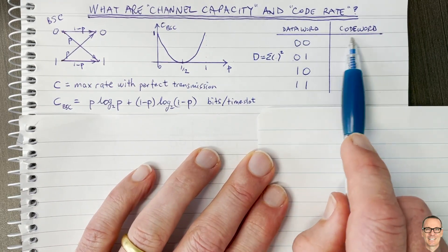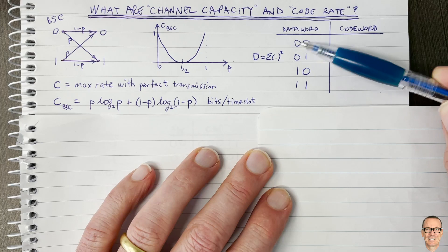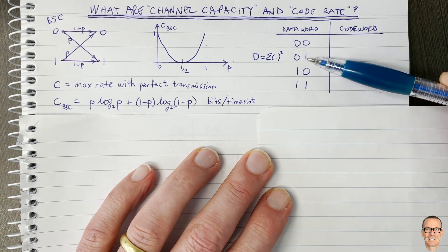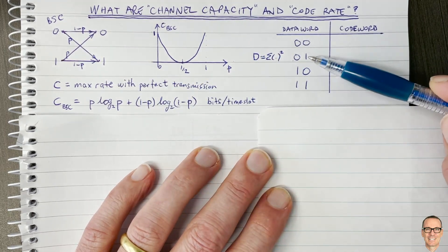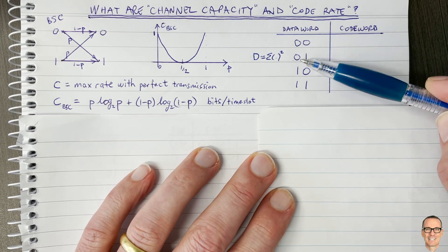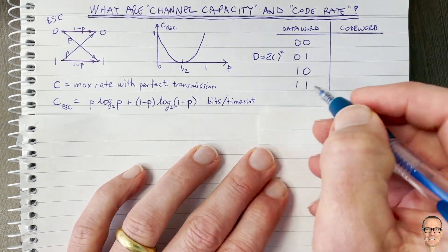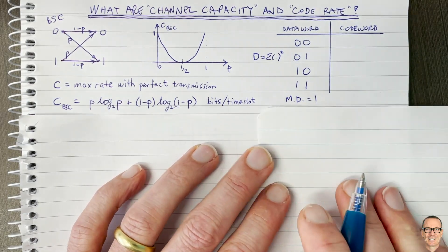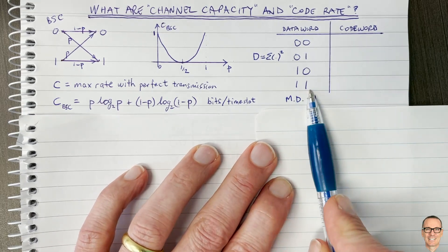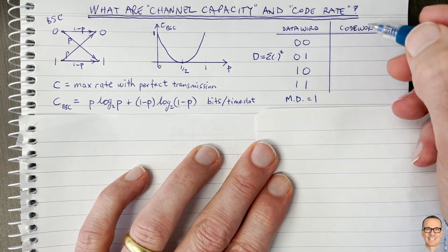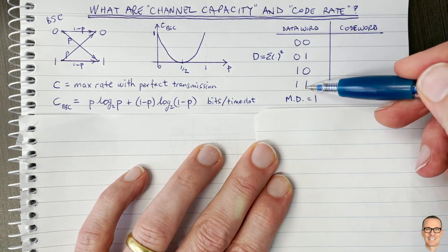We use 'data word' for the input data bits and 'code word' for the bits we code into before sending. For two-bit data words, the minimum distance between any of the code words is one — because if an error happened in one bit, the result would look like another valid code word and you couldn't tell the difference. So the minimum distance equals one, and the rate is one bit per time slot. Because the minimum distance is only one, we can't correct any errors.